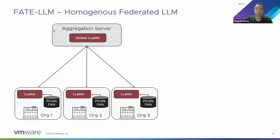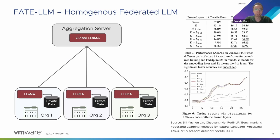Starting with the first challenge: the model parameters being transmitted during federated learning are too large. The most basic way to apply federated learning in large language models is for all participating parties to jointly train or fine-tune a large language model with the same architecture. For example, with three parties, they can together fine-tune a LLaMA model with their own local data. To address the high communication cost, the industry has tried various methods, such as freezing certain layers of the model and only training and updating other layers. However, experimental results show that although communication cost may be lower, it can significantly impact the final model's performance. So we need to explore more effective ways.